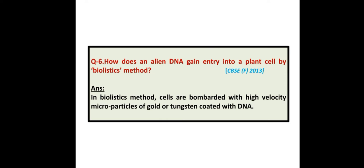How does an alien DNA gain entry into a plant cell by the biolistics method? Answer: In the biolistics method, cells are bombarded with high-velocity microparticles of gold or tungsten coated with DNA.